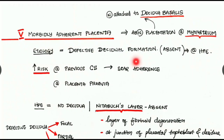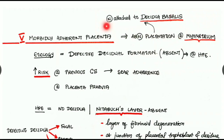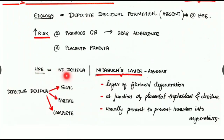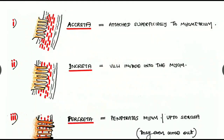The fifth cause is morbidly adherent placenta, meaning abnormal placentation in the myometrium. Normally the placenta is attached to the decidua basalis, but here there is defective decidual formation — it may be absent — seen on histopathological examination. Due to this, placentation occurs at an abnormal site within the myometrium. High risk factors include previous cesarean section with scar adherence and placenta previa. On histopathology, there is no decidua basalis and the Nitabuch's layer is absent — normally this fibrinoid degeneration layer at the junction of trophoblast and decidua prevents invasion into the myometrium.